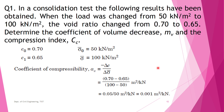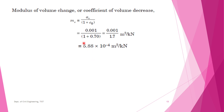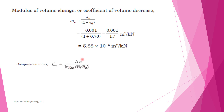Having found Av = 0.001 m²/kN, we find Mv = Av / (1 + e₀). Substituting the values gives Mv = 5.88 × 10⁻⁴ m²/kN. This is the coefficient of volume change. Next, the compression index Cc is calculated using the equation; substituting the values gives Cc = 0.166.